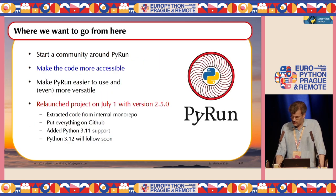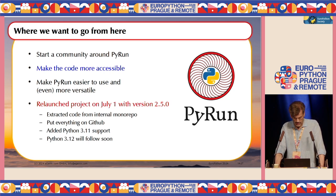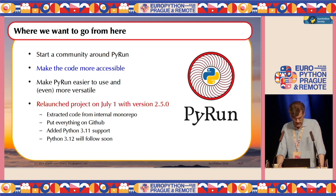We want to create a small community around PyRun. It's been open source since 2012, but we did not have it on GitHub yet. The reason being that we use a monorepo at Egenics, so it was not easy to put everything online. What we've done now is extracted everything from our monorepo and put it on GitHub on July 1st as version 2.5.0. If you want to help, go to GitHub, search for egenics pyrun, and start submitting pull requests or filing issues.